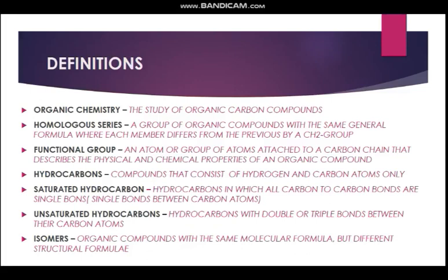A saturated hydrocarbon is one in which all carbon-to-carbon bonds are single bonds, meaning we have single bonds between our carbon atoms. Unsaturated hydrocarbons are hydrocarbons with double or triple bonds between the carbon atoms. Isomers are organic compounds with the same molecular formula but different structural formulae.